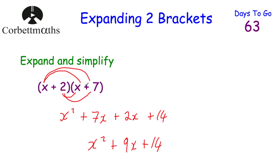What we did was multiply both terms in the second bracket by x to get x lots of it, then multiply both terms by 2 to get 2 lots of it, and then added them together. Now let's have a look at the next question.